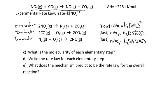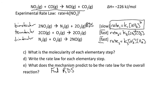Finally, we want to know what this mechanism predicts for the rate law of the overall reaction. All I need to do is find the rate determining step (RDS). We're told that the first step is slow and the other two are fast, so the first elementary step is the rate determining step. Its rate law determines the rate law for the overall reaction, giving us rate = K[NO2]². Since NO2 is a reactant and not an intermediate, we're fine.